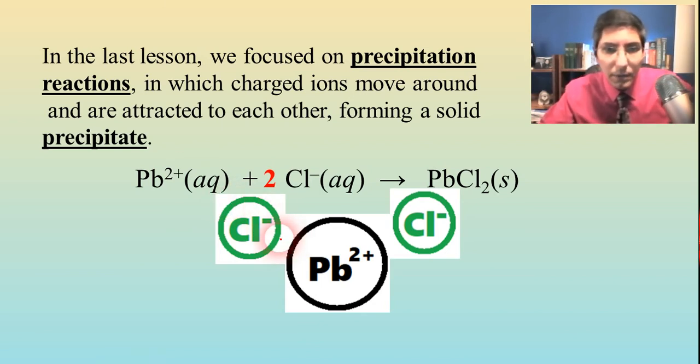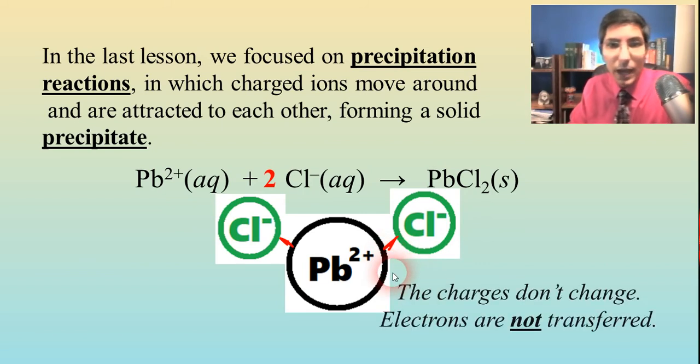And so these electrostatic attractions would be formed there, and they would be pulling toward each other, and this is part of a larger crystal that would eventually have a high enough density that it would precipitate out of solution, and you'd actually see this solid form. Now notice, in this case, the charges were not changing, which means electrons were not transferred.